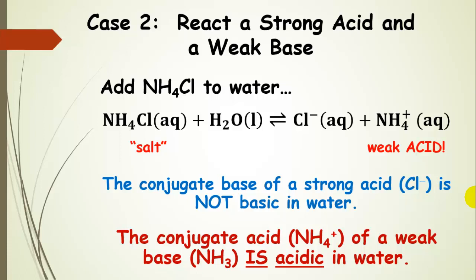Let's add ammonium chloride to water. It dissociates into chloride anions and ammonium ions. Ammonium is the conjugate acid of a weak base, so ammonium is itself a weak acid. The conjugate base of a strong acid — chloride anion — is not basic in water, so it does not affect the pH. But the conjugate acid of the weak base ammonia is acidic in water, so putting ammonium chloride in water gives us an acidic solution.